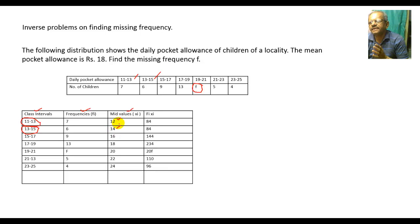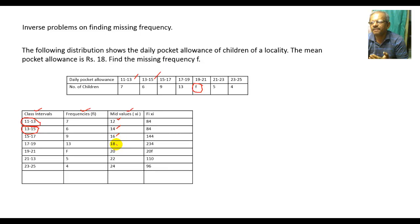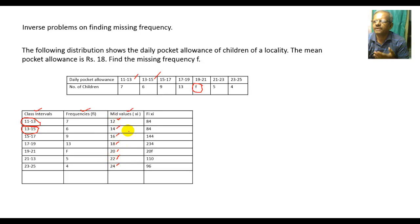Since there is a difference of 2 between consecutive mid-values, just add 2 each time: 14+2=16, 16+2=18, 18+2=20, then 22 and 24. These mid-values are denoted by xi.